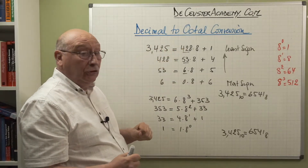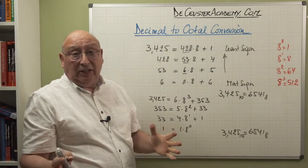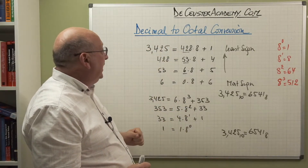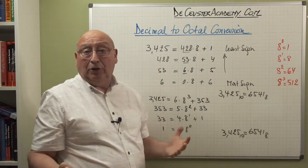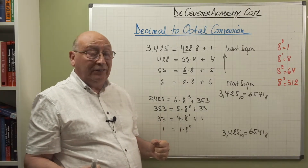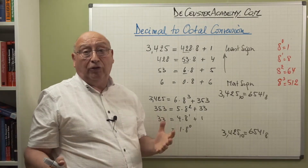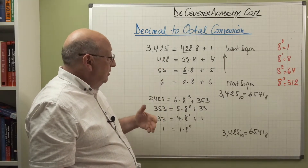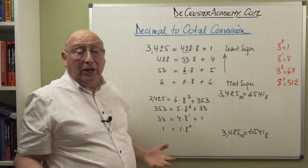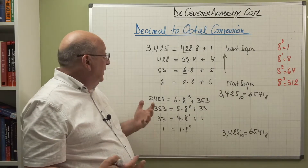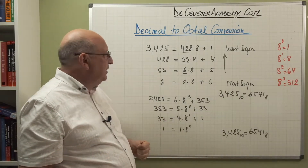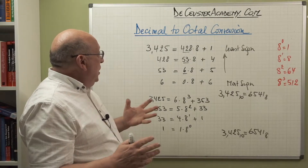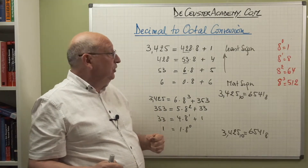So that's the conversion from decimal to octal — we did two examples using two different methods. You can select the method you prefer. You can also find easy conversions on some websites, or make your own in Excel where there may be functions available.